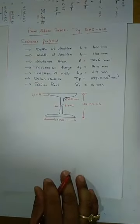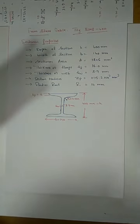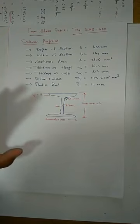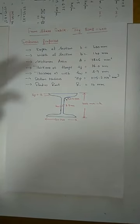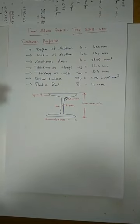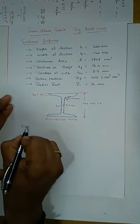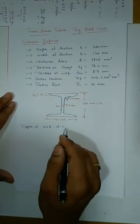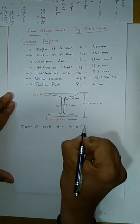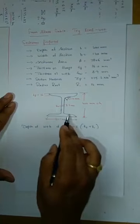The design steps are: (1) Consider the beam as a plastic section; (2) Check section classification — plastic, compact, semi-compact, or slender; (3) Design for shear force; (4) Design for bending moment; (5) Check for deflection.